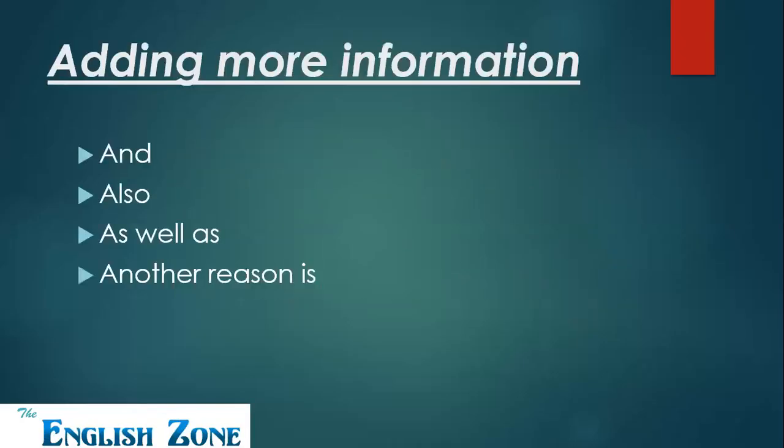So first of all, when you want to add more information — for example, we are speaking about a topic and we want to add more information — then the words we use are: 'and,' 'also,' 'as well as,' and 'another reason is.' These are the four words which are used only to add more information.